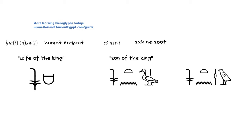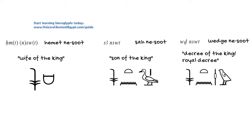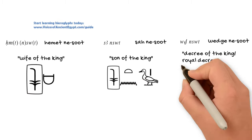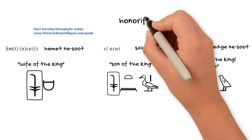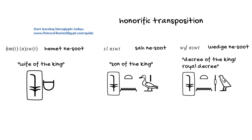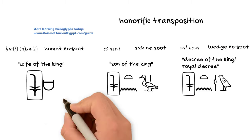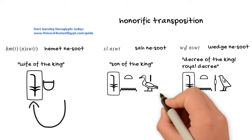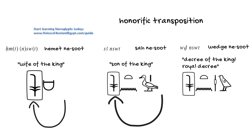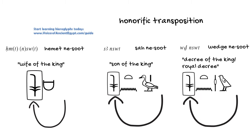Now you'll notice in these terms that the 'nesut' comes first, even though I'm saying it second. That is because of a practice we call honorific transposition, where the ancient Egyptians, when talking about a king or a god, will put their name or title first, even though grammatically — and we presume the way it was spoken, and there's some evidence for this, we're not just presuming it — it actually would have come later in the phrase. But they write it first as a way to honor the king or the god.